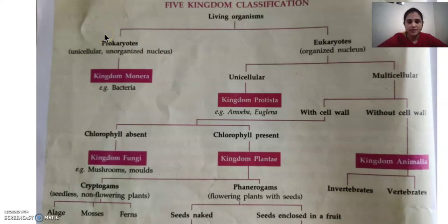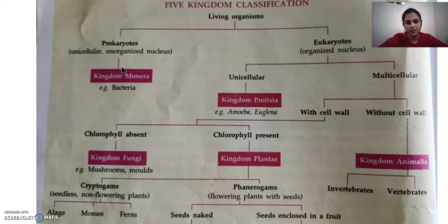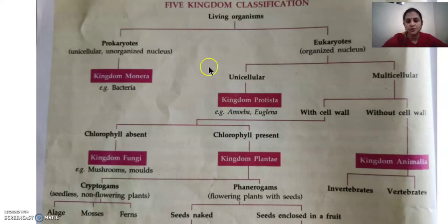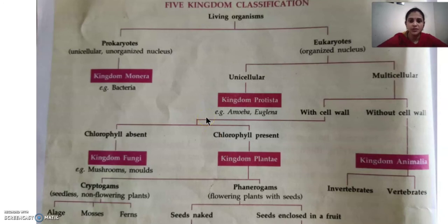Living organisms are divided into two groups: prokaryotes and eukaryotes. Kingdom Monera comes under prokaryotes. Prokaryotes are the ones with an unorganized nucleus, while eukaryotes consist of organisms with an organized nucleus. Organisms are again divided into unicellular, which consist of a single cell, and multicellular, which consist of more than one cell. Kingdom Protista comes under the unicellular group.